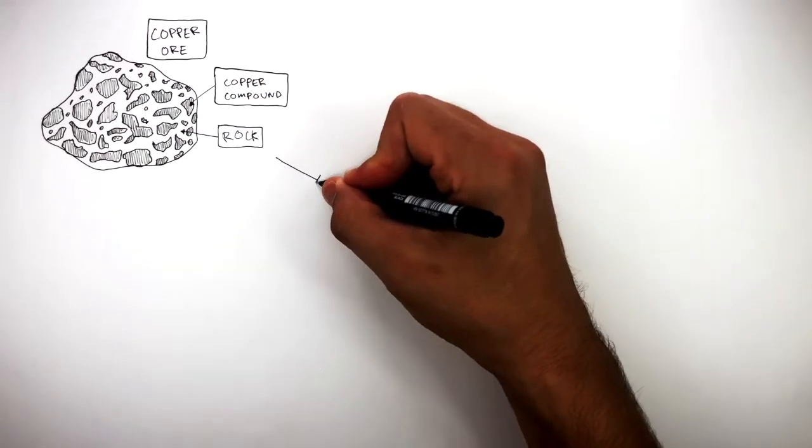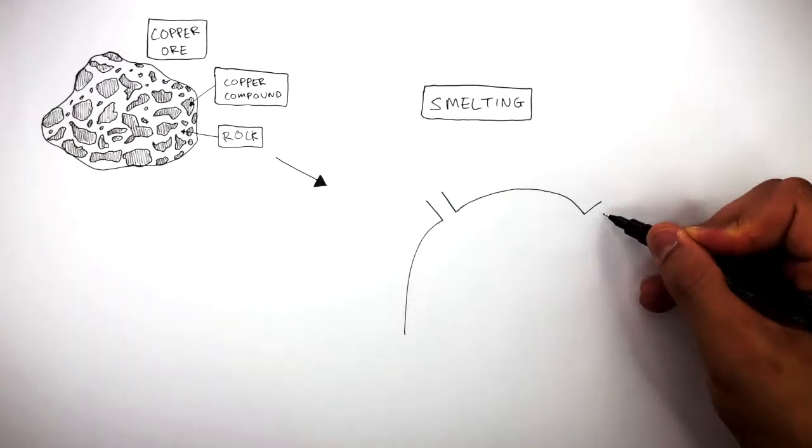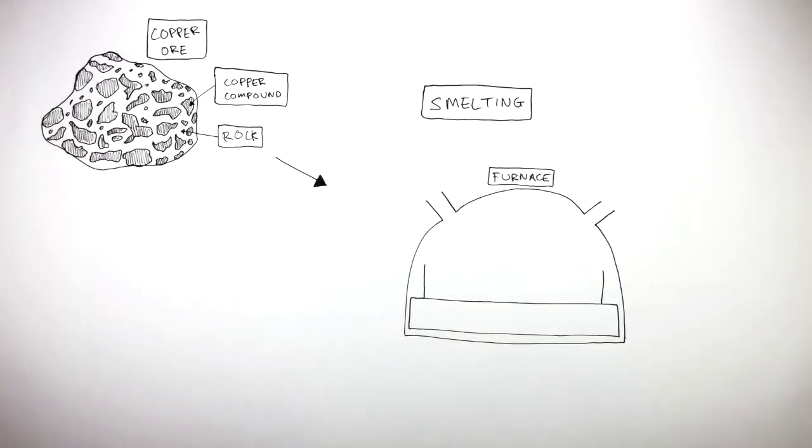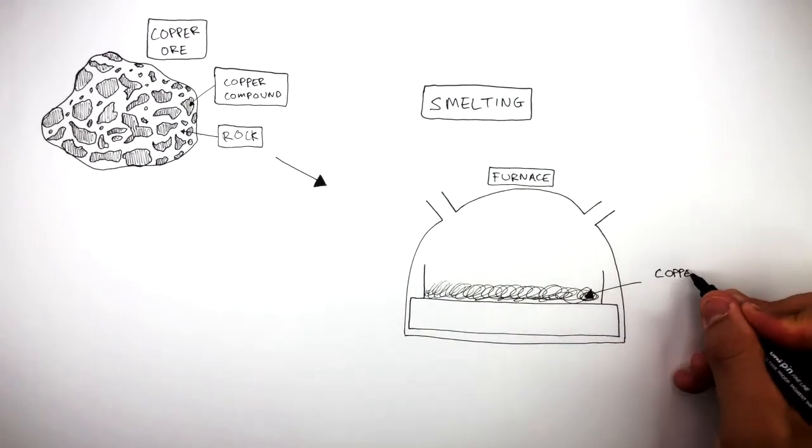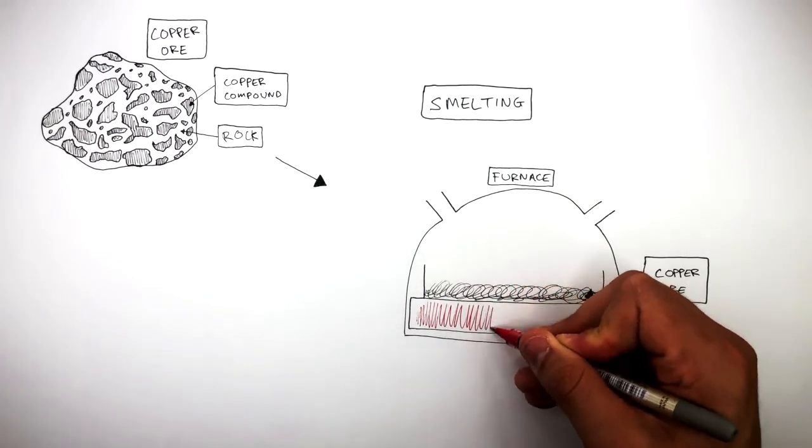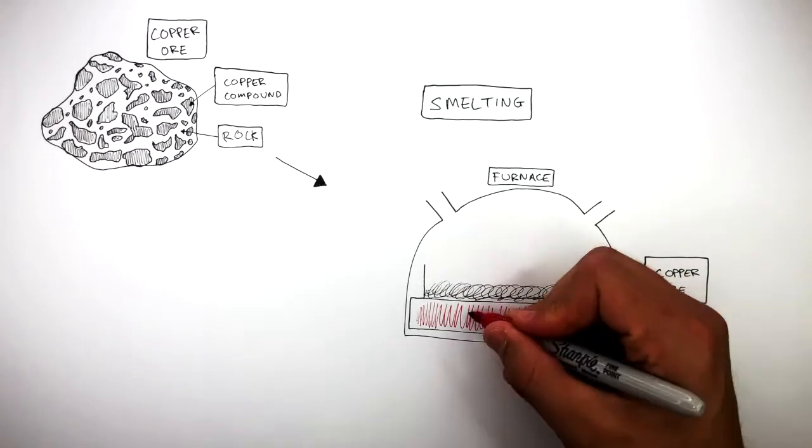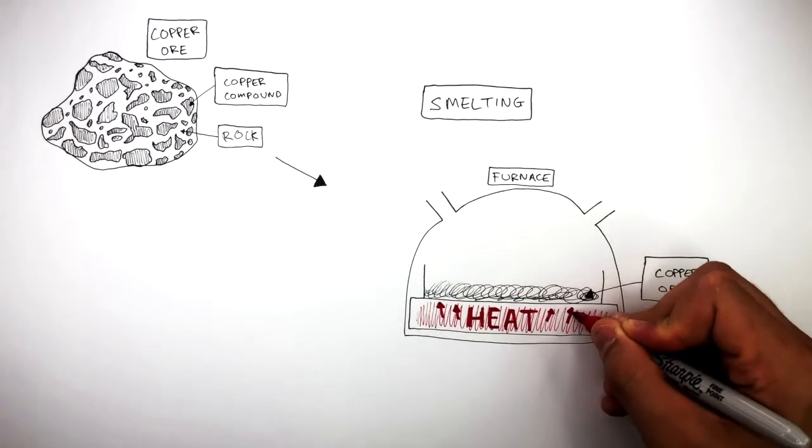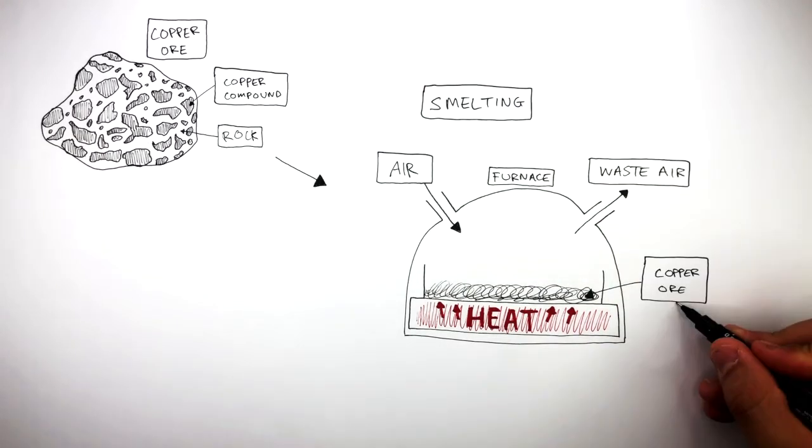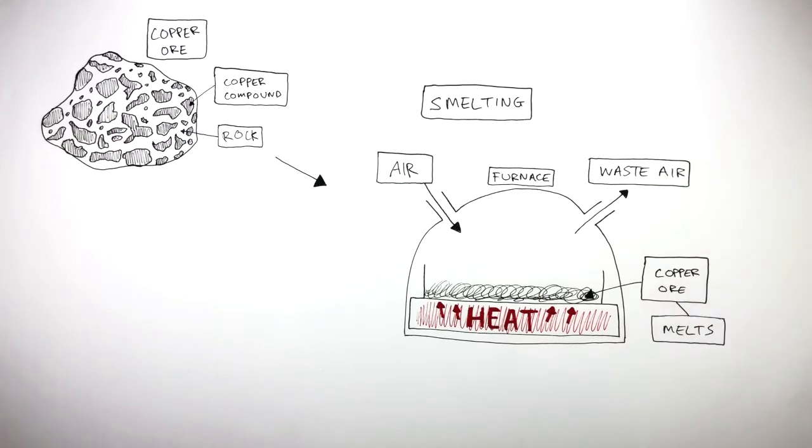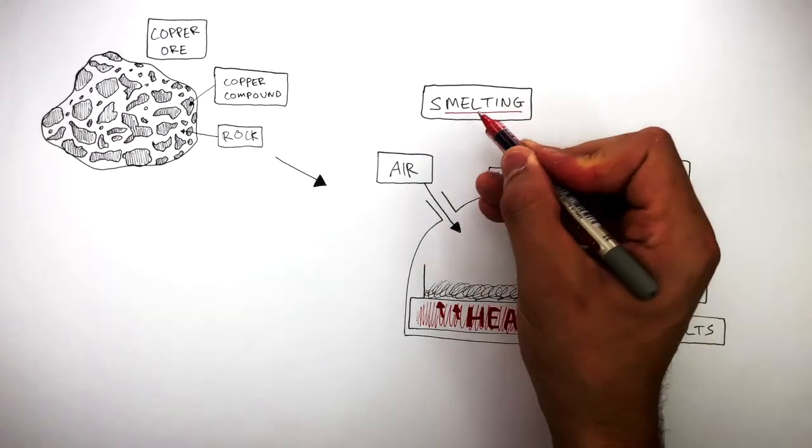The copper can be extracted from the copper ore using smelting. This involves using a furnace. The copper ore is placed inside the furnace where it is heated to very high temperatures. This heat melts the copper ore. Air flows into the furnace and waste air flows out. The copper ore melts, which is why this process is called smelting.